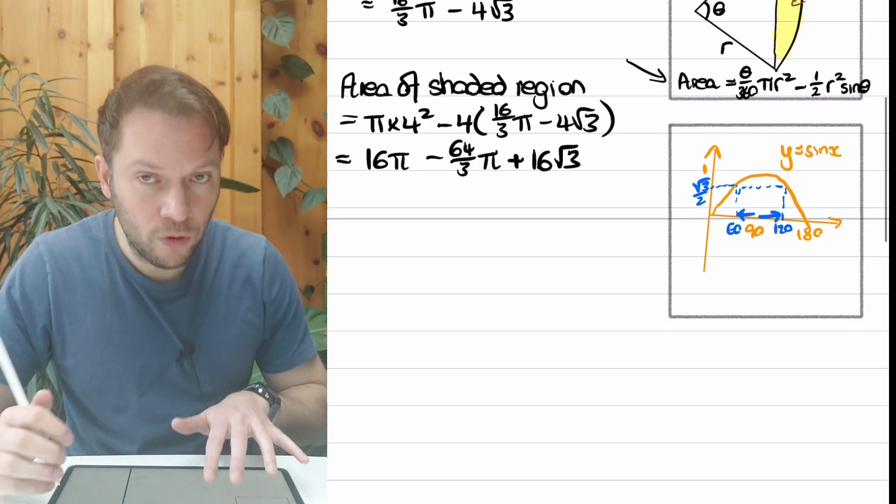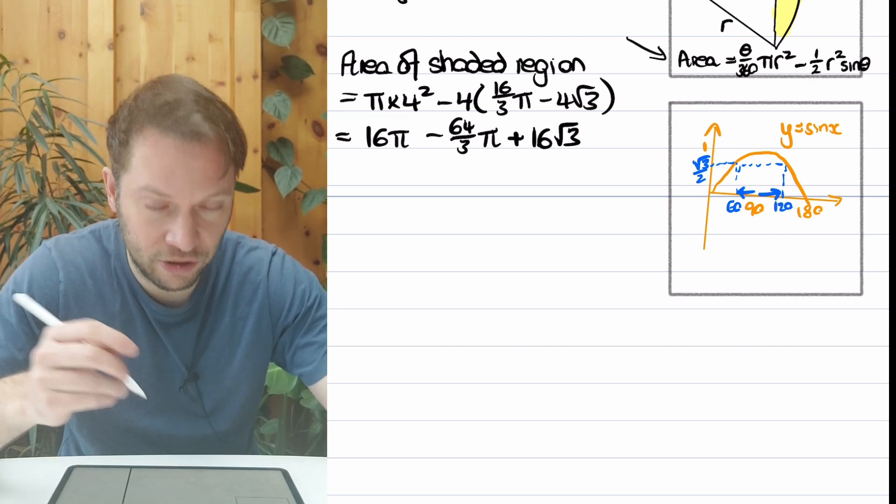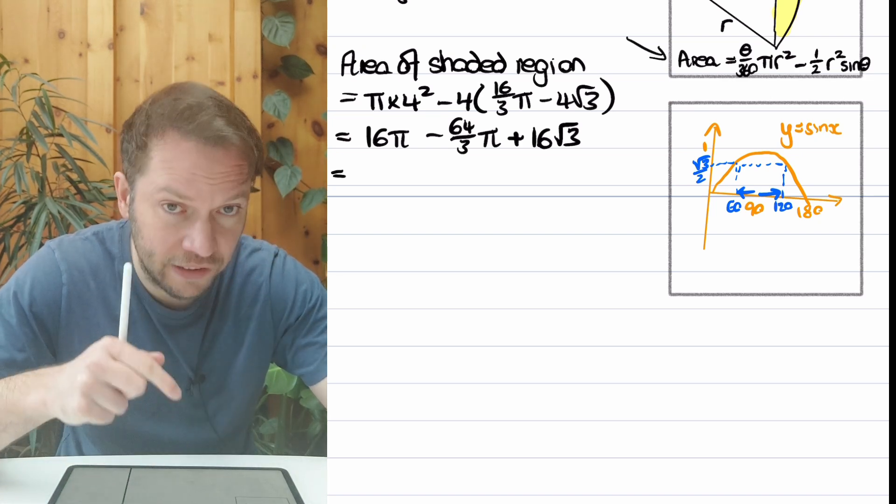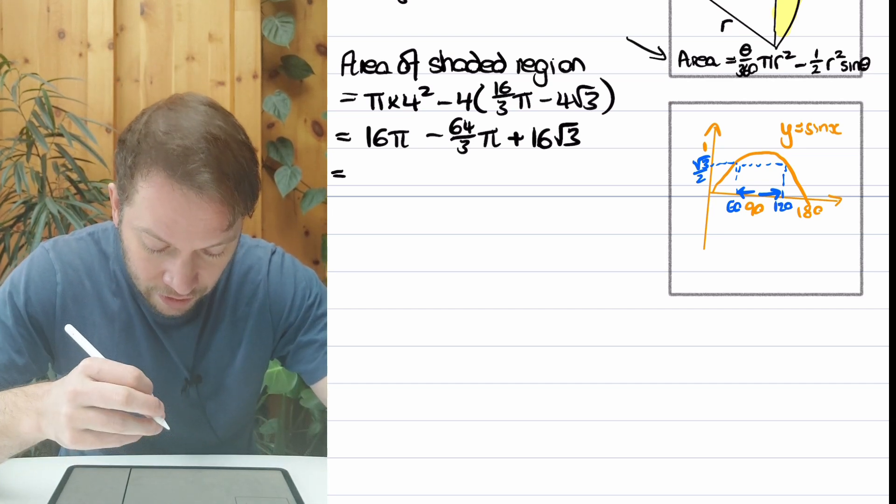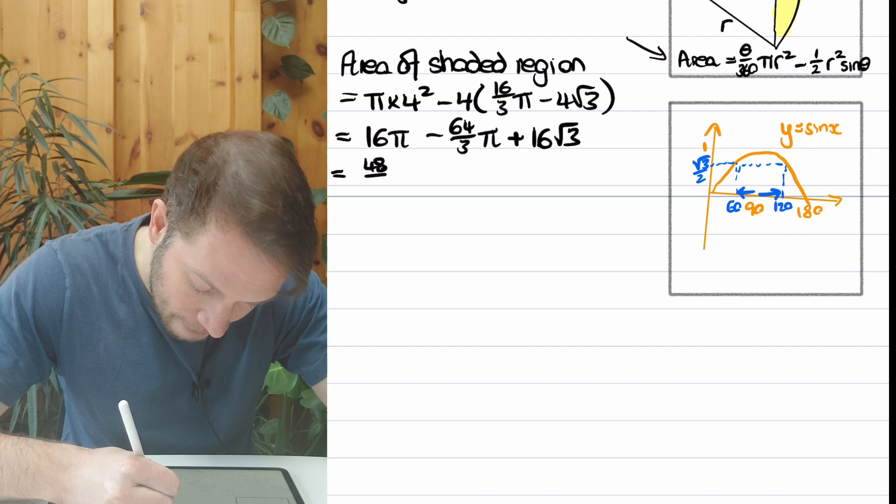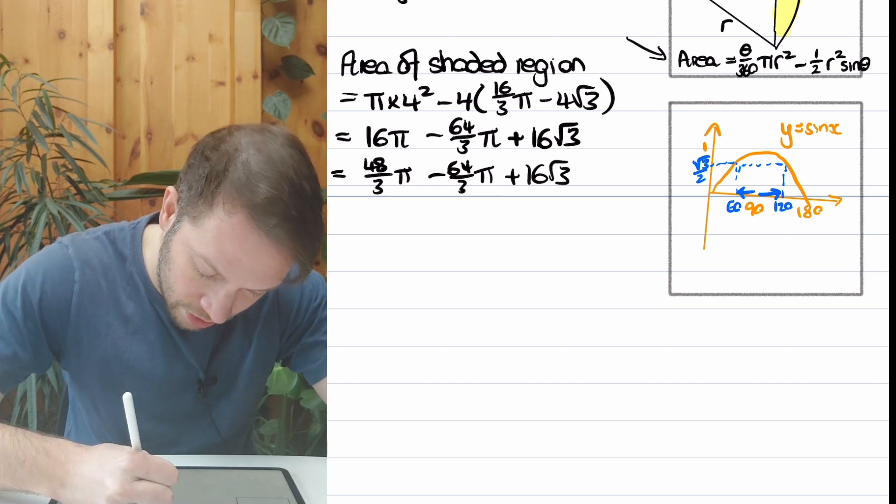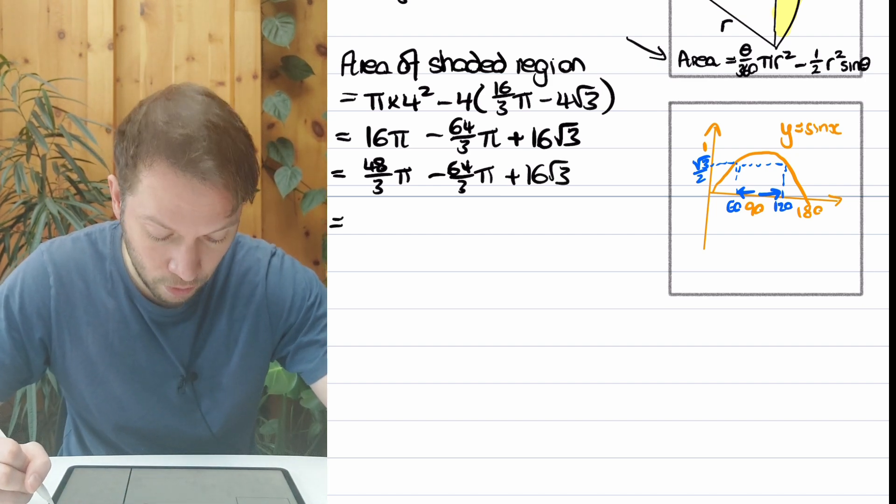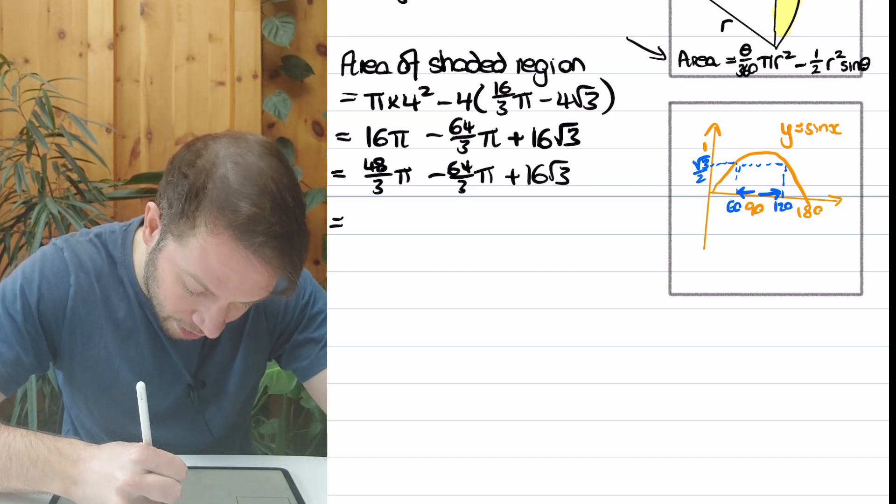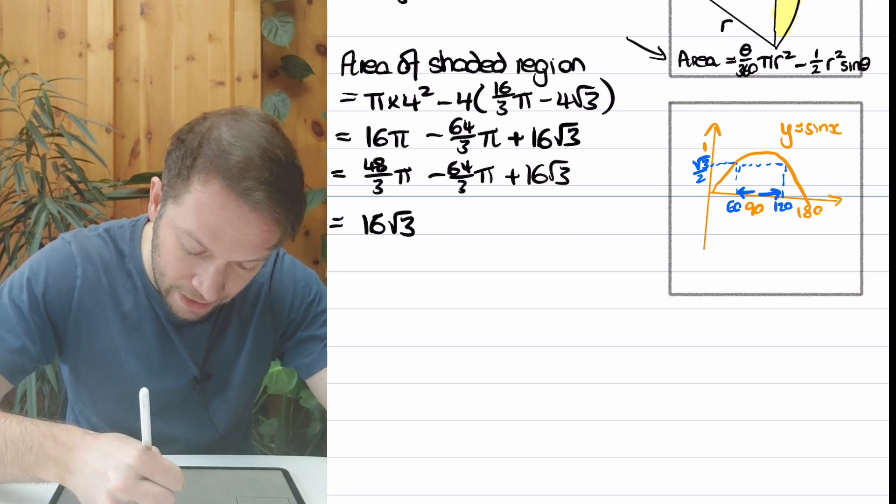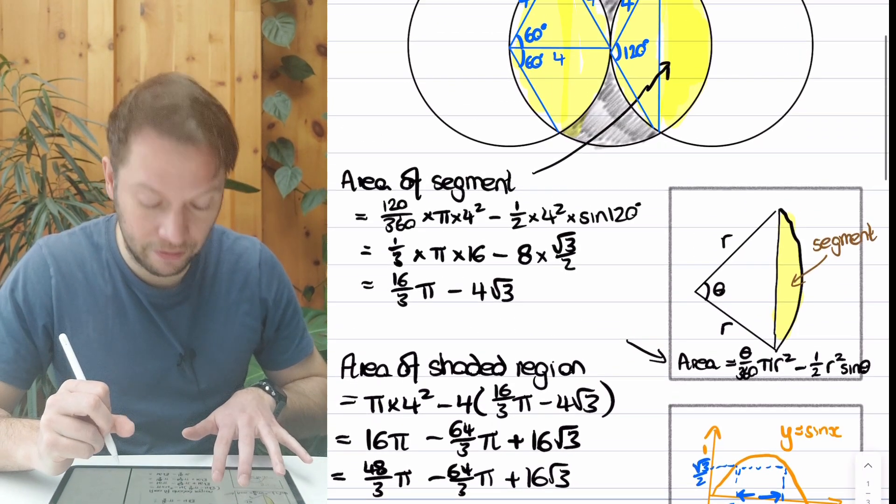And finally, we can tidy up even more. We've got some like terms here, two π terms—one's fractional, one's not. Let's turn the non-fraction one to fractional. Since the second one is 64/3, I'm going to put the 16 as something over 3 as well to make the fractions easier to subtract. So 16 is 48/3. And now they're both over 3. We've got to do 48/3 minus 64/3. That's minus 16/3. And I want to put that positive term first, so the 16√3, I'm going to put first. And then we said the π terms came to minus 16/3 π. And that is the final answer. That is the area of the shaded region. We are done.